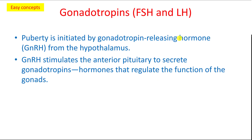The gonadotropins — FSH and LH — are also produced by the anterior pituitary gland. They target either the ovaries or the testes in females and males, and are important for regulating the sexual activity of the body. FSH is involved in the development of the follicle containing the egg, LH induces ovulation in the female reproductive system, and both affect the testes to produce testosterone.